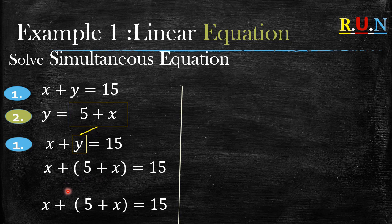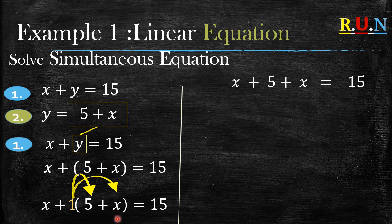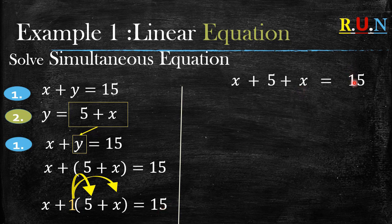After you put them in brackets, if there is no number in front of the bracket and there is just a sign — like in this example we just have x plus open bracket five plus x close bracket — this means there is an invisible one. Depending on this sign, this invisible one can be positive or negative. In this case the invisible one is positive, so we multiply that positive one by five and by x.